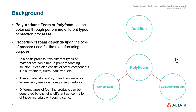Polyurethane foam can be obtained through different types of reaction processes, and the properties of the foam depend upon the type of process used for its manufacturing. In the basic process, two different materials are combined to form a foaming solution. These materials are polyol and isocyanate, where isocyanate acts as a joining mediator.